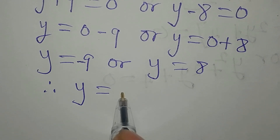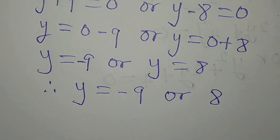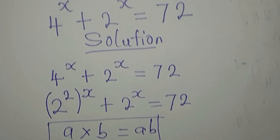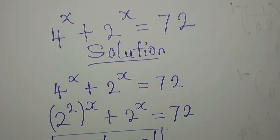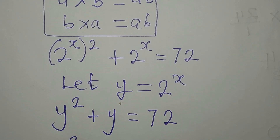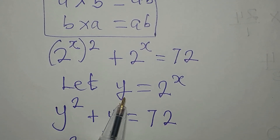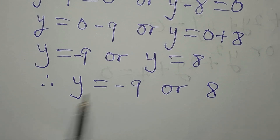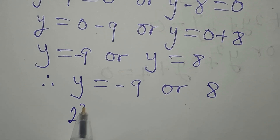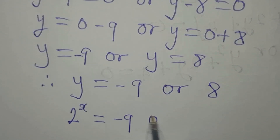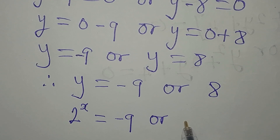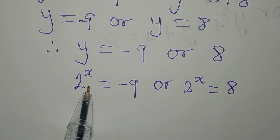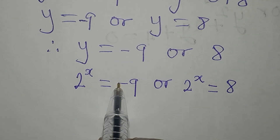So y equals minus 9 or 8. But remember, y is not in the original equation — we introduced it when we let y equal 2 to the power of x. So substituting back, we have 2 to the power of x equals minus 9, or 2 to the power of x equals 8.